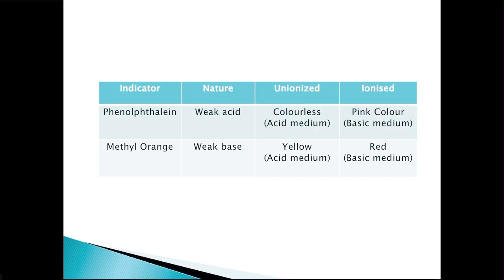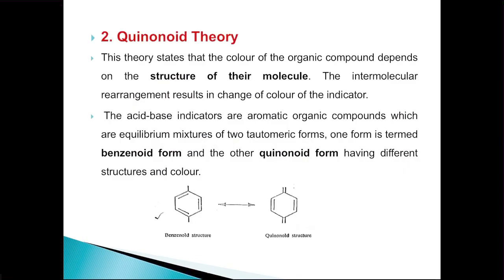Overall, this can be summarized with the help of a table. Indicators like phenolphthalein and methyl orange are shown — phenolphthalein is a weak acid and methyl orange is a weak base. In unionized state and in ionized state, each indicator shows a different color.